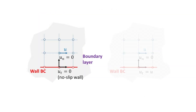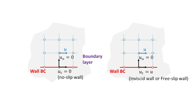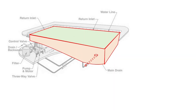In CFD, it is also possible to let the fluid slip along the wall by setting the shear stresses equal to zero. As such, the wall becomes an invisible wall, and no boundary layer will develop along it since there is no viscous effect. For example, for the top boundary of the swimming pool domain, we can simplify the problem by assuming that the free surface of the pool is a flat plane and that the flow is steady, so the water level is fixed. Thus, we can prescribe it as the free-slip wall boundary condition.